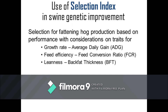Let's take a look at the use of selection index in the selection for fattening hog production, utilizing the performance of the animal in terms of growth trait as indicated by the average daily gain, feed efficiency as indicated by the feed conversion ratio, and leanness as indicated by the back fat thickness. Average daily gain or ADG refers to the average daily increase in live weight during the period of fattening. Higher values for ADG indicate faster growth rate, hence better performance.